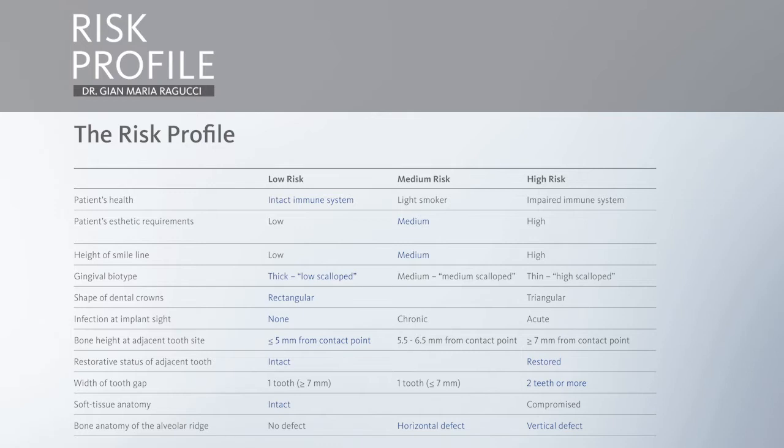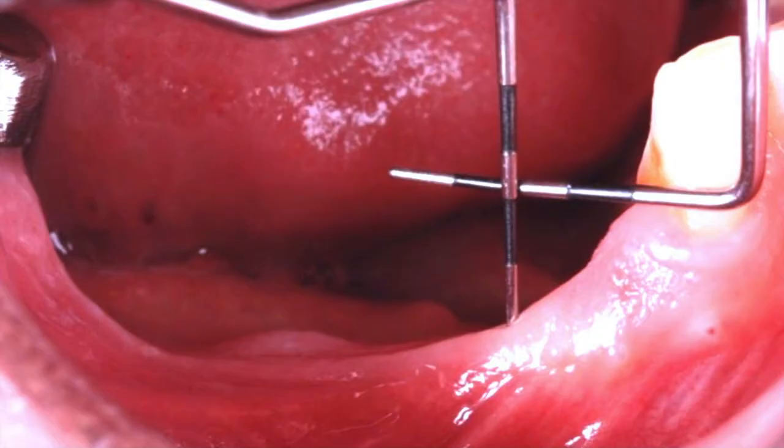The first thing that strikes us is the huge vertical defect in the fourth quadrant. If we take a close-up view of that defect, we can appreciate a 6–7 mm vertical defect over a long span in the posterior mandible from 4.3 to 4.6.